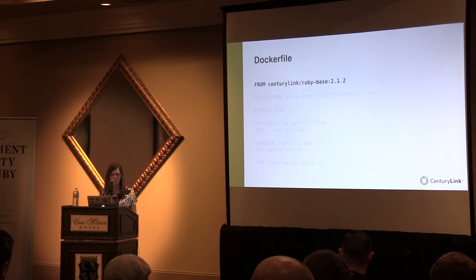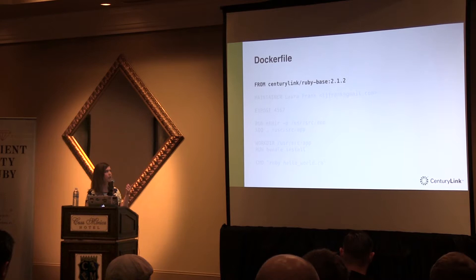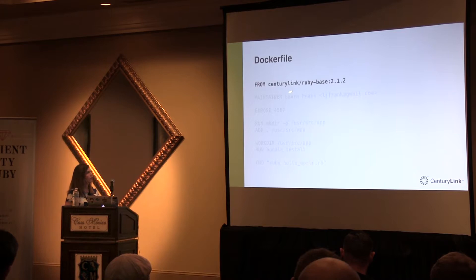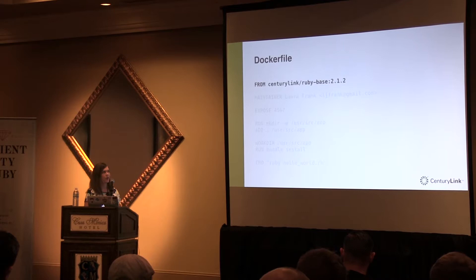The first thing the Dockerfile did when building this image was pull down a base image — everything starts with FROM. There is a thing called scratch that does exist; scratch is usually included in whatever you reference as your base file. You'll probably never write an image that is built from scratch — it exists as the base for base images, but you don't have to use it. This is a Ruby base image with version 2.1.2, so if I want a different version, I can just swap out that tag.